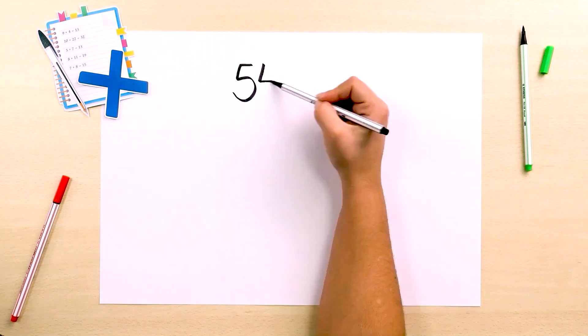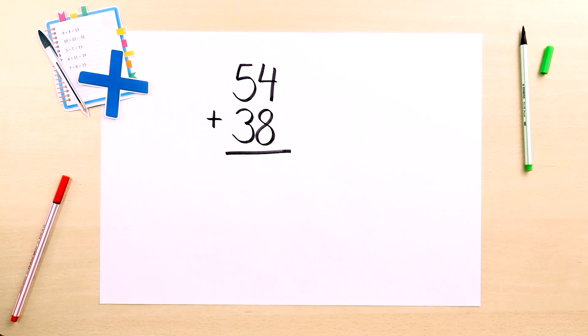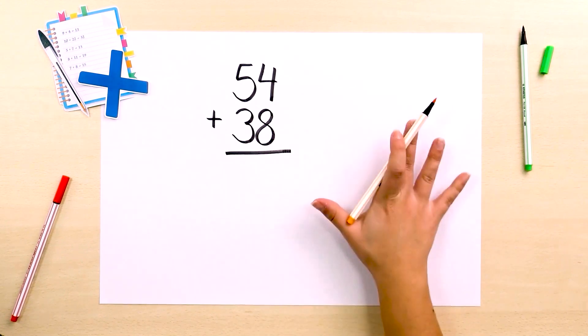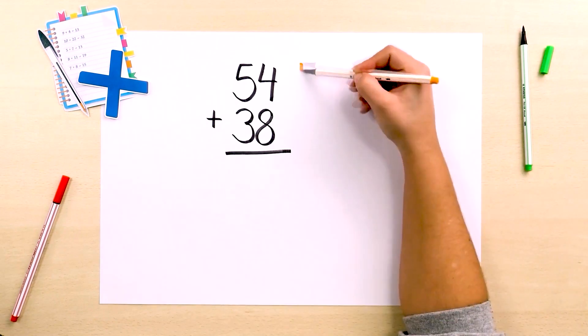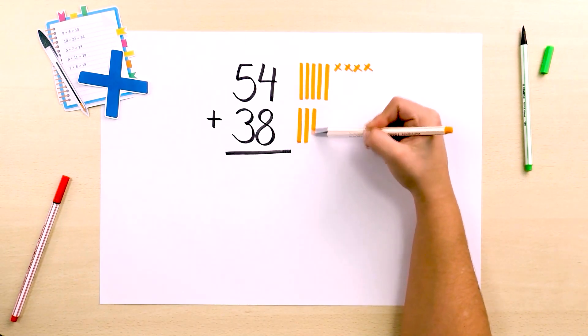Let's do another addition, such as 54 plus 38. Using a more abstract representation, we represent the numbers using base 10 blocks on paper. 54 is 5 tens and 4 units, and 38 is 3 tens and 8 units.